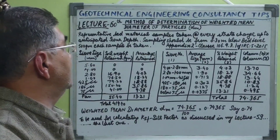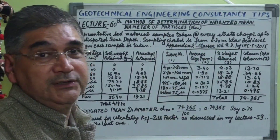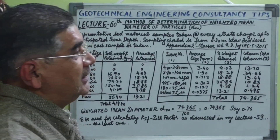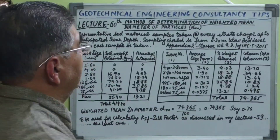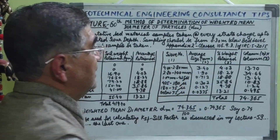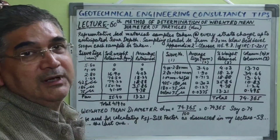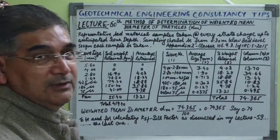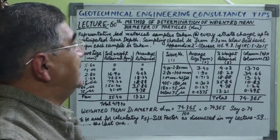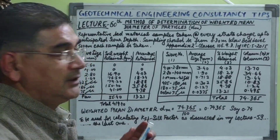Welcome, dear friends, to my YouTube channel, Geotechnical Engineering Consultancy Tips. This is my lecture 60. I had told you that immediately after finishing my 59th lecture I would tell you about the method of determination of weighted mean diameter of particles, because this is related to the formula for calculating scour depth. dm is basically the weighted mean diameter of the bed materials — the soil particles which we encounter.